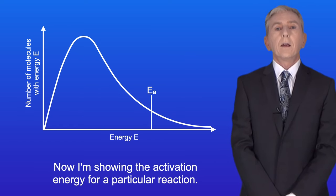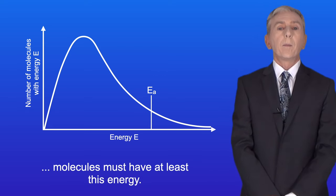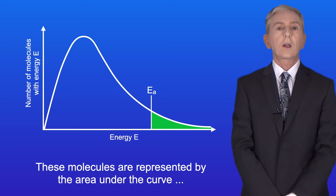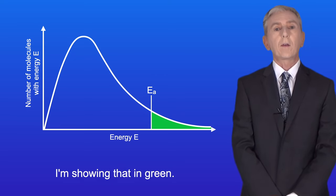Now I'm showing the activation energy for a particular reaction. Remember that in order to collide effectively and react, molecules must have at least this energy. These molecules are represented by the area under the curve to the right of the activation energy, and I'm showing that in green.